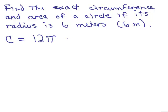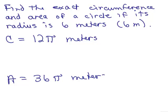That's going to be 12π meters. That's the circumference. And let's do the area. How do we get the area? We square the radius. So we do 6 times 6, 36π meters, and that's all there is to it.